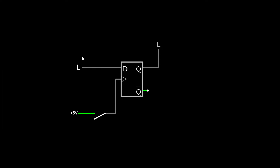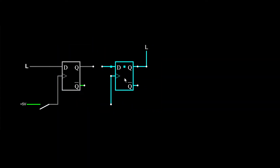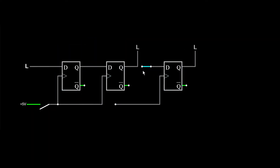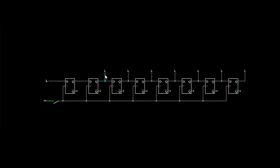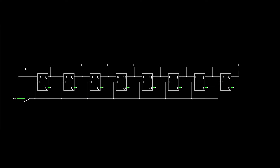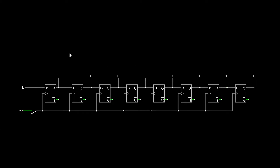A shift register uses these flip-flops chained together, all sharing a single clock signal. The output of the first flop is connected to the input of the second, and this continues for eight flops. Every time you pulse the shared clock signal, the value shifts over one register at a time. This is how we get the shifting effect in a shift register.